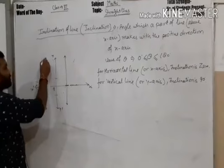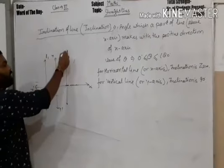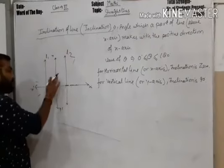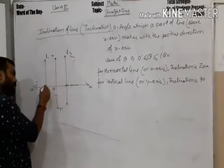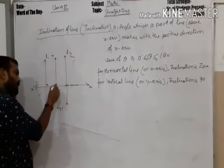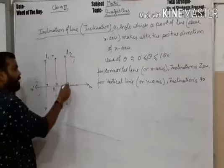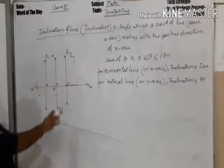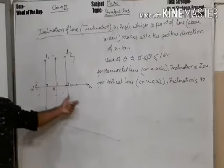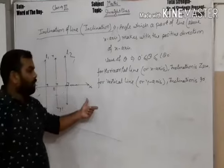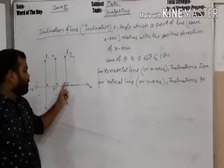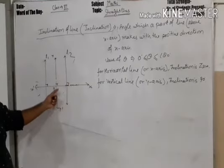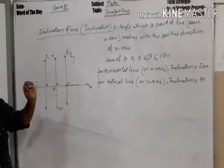For a vertical line, or the y-axis, the inclination is 90 degrees. Suppose these two vertical lines are there — they are vertical — so the inclination will be 90 degrees, because they make 90 degrees with the x-axis.